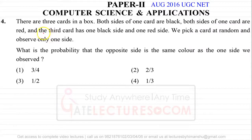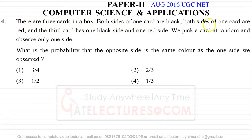We are solving Paper 2 of UGC NET August 2016. This is question number 4. The question is: there are three cards in a box. Both sides of one card are black, both sides of one card are red, and the third card has one black side and one red side.